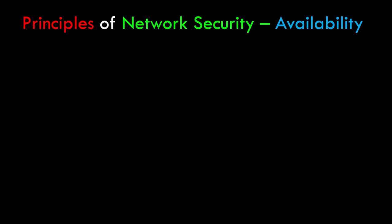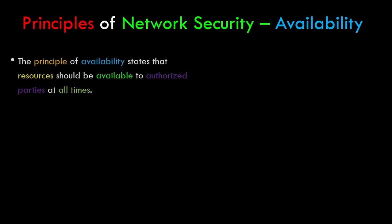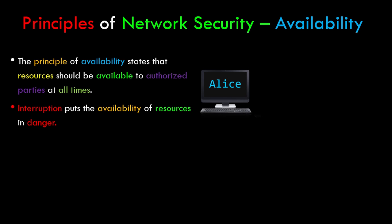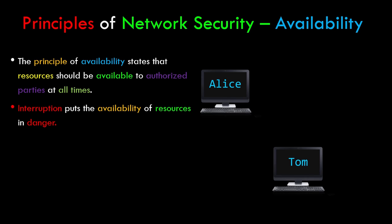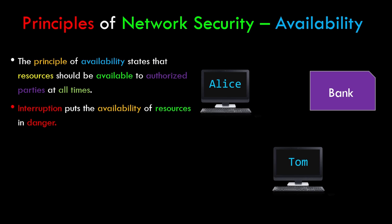Let's have a look at the principle of availability. This principle states that resources should be available to authorized parties at all times. Interruption attacks usually put the availability of resources in danger. For example, due to intentional actions of an unauthorized user Tom, an authorized user Alice may not be able to contact the bank servers for certain services.